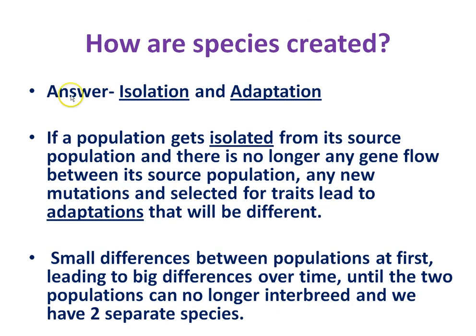How are species created? The answer is isolation and adaptation. If a population becomes isolated from the source population, there's no longer any gene flow between them. New mutations are selected for in the isolated population but not passed on to the source population. Over time, differences accumulate until the two populations can no longer interbreed — and they're considered two different species. The species definition is not being able to interbreed and produce viable, fertile offspring.